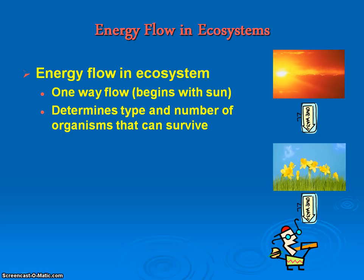We know that energy flow in an ecosystem is usually one way and always begins with the sun. The sun is the ultimate source of energy. And depending on the amount of energy that flows through an ecosystem will determine the type and number of organisms that can survive within that particular system.